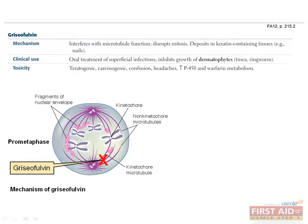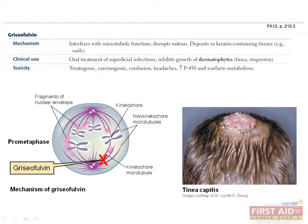Griseofulvin disrupts mitosis by interfering with microtubule function. This oral medication is used to treat superficial fungal infections by dermatophytes such as tinea and ringworm. The use of griseofulvin is limited due to its teratogenic and carcinogenic potential. Other unpleasant side effects include confusion, headaches, and upregulation of P450 enzymes.